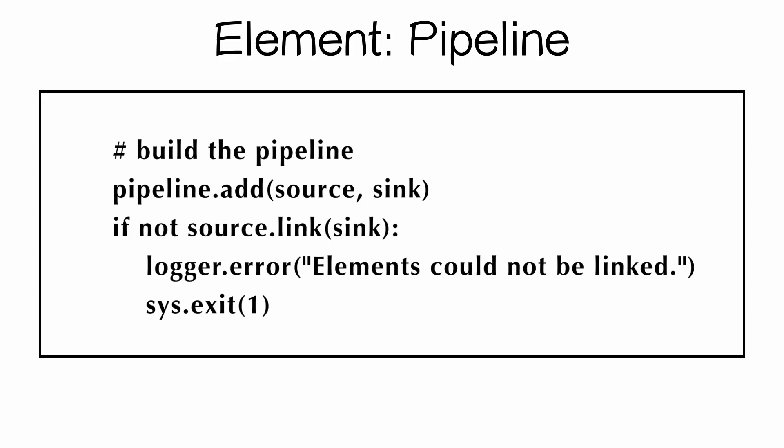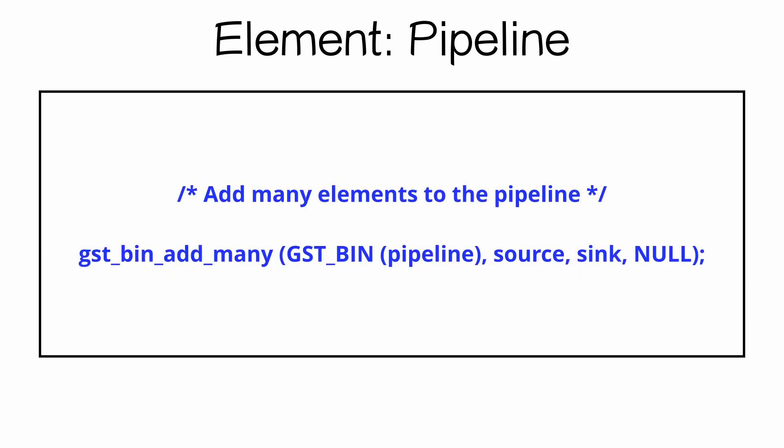After we create the source and the sink, we need to link them up or add them. We use pipeline.add() where the first parameter is source and the second parameter is sink. Another way to add the elements is to use the bin_add_many() function.